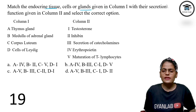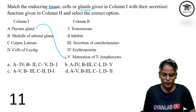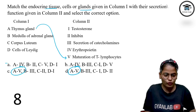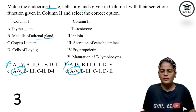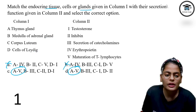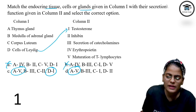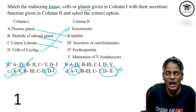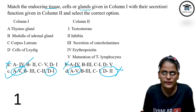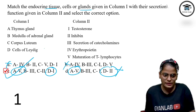Match the endocrine tissue and cell with the correct options. Thymus gland matures T lymphocytes, so A's answer is 5. Using elimination strategy: Leydig cells — the simplest to remember — produce testosterone hormone, so D's answer is 1. Looking at the options, D's answer is 1 in option C only, so option number C is the right answer. Always use the elimination strategy rather than trying to match every single question.